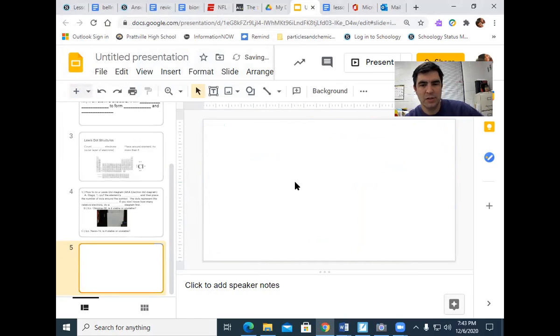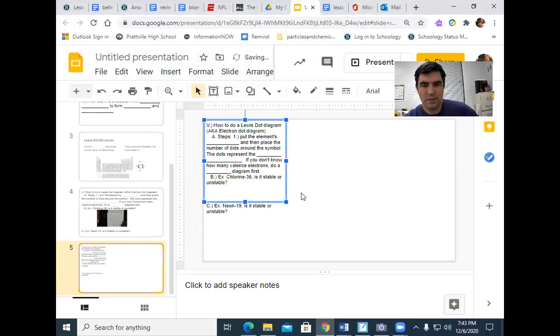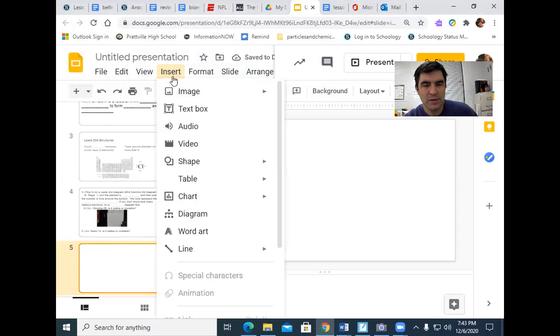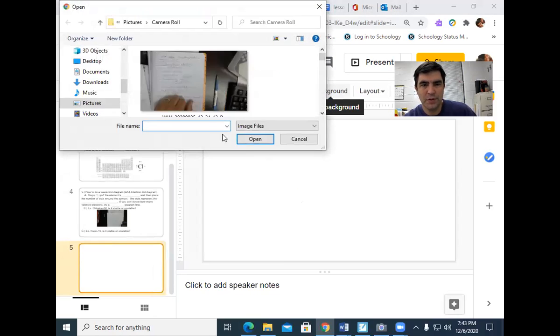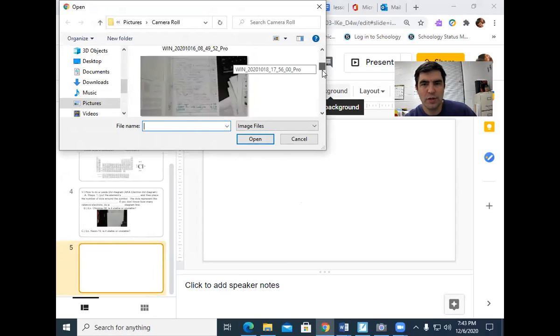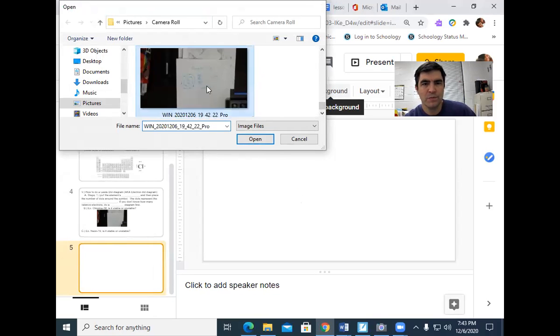So I'm going to add a page. That's not what I want to do. Control Z. Insert, image, upload from computer. I've already done it. It's the same one. And there it is, it's a beautiful image. And then I can see that they did it.